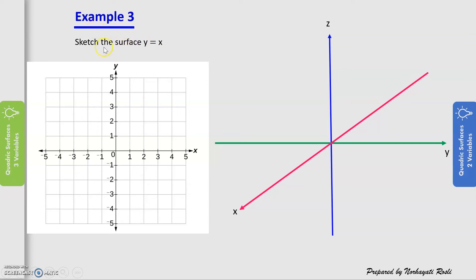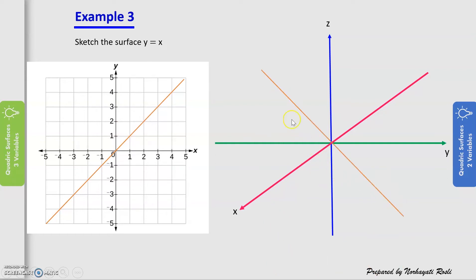Example 3: sketch the surface of y = x. Unlike the previous examples with only one variable, this has two variables. To build understanding, we first plot y = x in the 2D coordinate system, which gives a diagonal straight line. We can then transform this line into the 3D coordinate system, placing it along the x and y axes, which gives the same line in 3D.